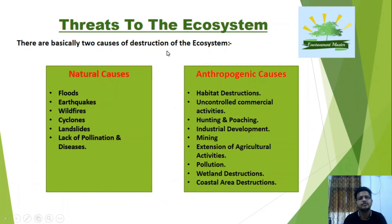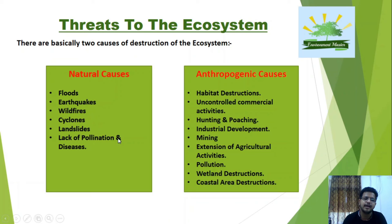There are various threats to the ecosystem from both natural and anthropogenic causes. Natural causes include floods, earthquakes, wildfires, cyclones, landslides, lack of pollination, and diseases. Anthropogenic causes include habitat destruction, uncontrolled commercial activities, hunting and poaching, industrial development, mining, extension of agricultural activities, pollution, wetland destruction, and coastal area destruction.